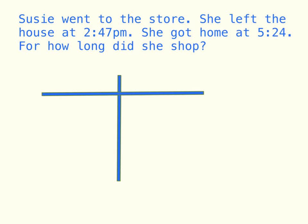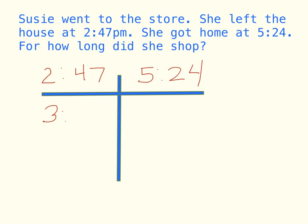The next thing we do is write our start time on top of the first column. So our start time would be 2:47 and our end time would be 5:24. The first thing I need to do is get 2:47 to the next closest hour. I know there are 60 minutes in an hour, so I want to move 2:47 to 3 o'clock. I write 3 o'clock here and over here I write 13 minutes, because from 2:47 to 3 o'clock it is 13 minutes — 10 minutes to 57, then another 3 minutes.